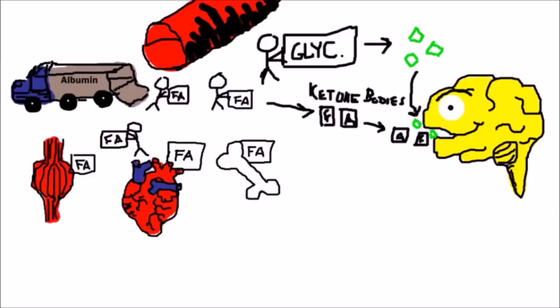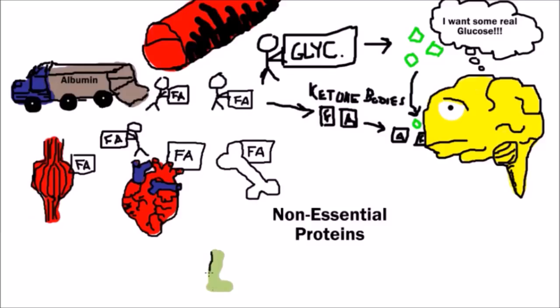Even though the body is utilizing the biochemistry process of ketosis for energy, it still needs small amounts of real glucose, which it will get from non-essential proteins, such as breaking down old scar tissue, worn out cells, and non-malignant growths.